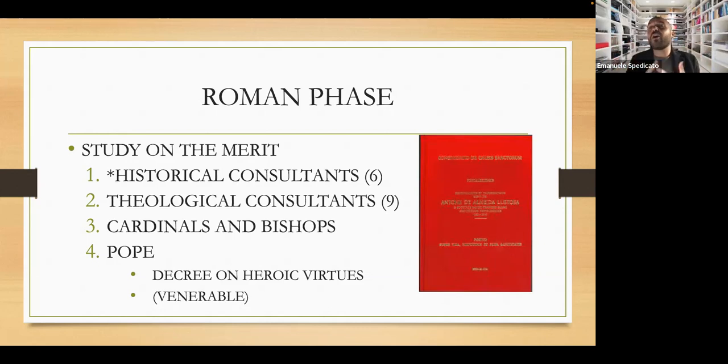So this is the difference. Okay. So servant of God, we're all servants of God, so to speak. Okay. We're all sons of God. We're all servants of God, but the venerability is really a juridic, a juridical step. And it happens after, as you can see here, the decree on heroic virtues. It's an official declaration of the Pope, because again, the last judge of all this process is really the Pope. So he's the one deciding.